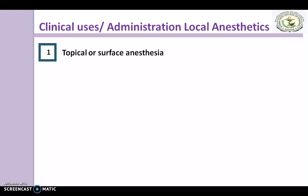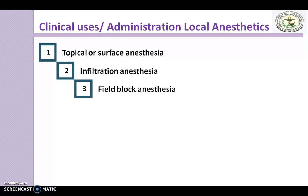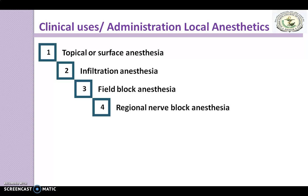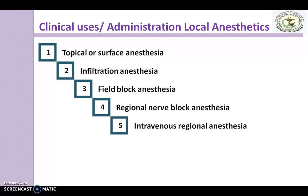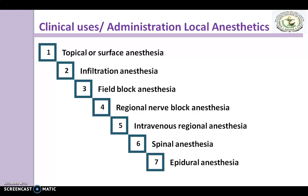The types are: first, topical or surface anaesthesia; second, infiltration anaesthesia; third, field block anaesthesia; fourth, regional nerve block anaesthesia; fifth, intravenous regional anaesthesia; sixth, spinal anaesthesia; and last, epidural anaesthesia. All these are the clinical uses which depend on how the anaesthetic is administered.